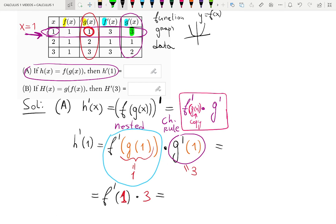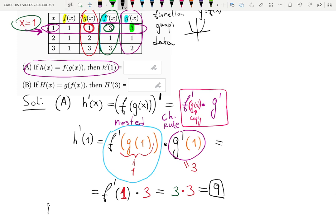So, I need to find f prime at 1. f prime is column number 4. f prime. And we need to look at f prime also at 1. The answer is 3. Not very interesting. They keep giving us 3 and 1 and 1 and 3. 3 times 3 gives me 9. And this is the answer for the first part of the problem.